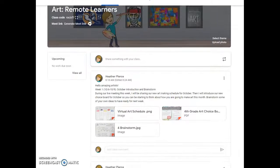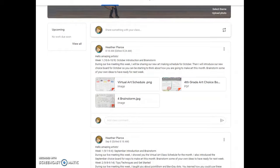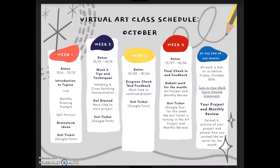Now if we look at the top of our stream, you are going to see new information for October. Looking at our schedule, remember we do this step-by-step, and this is the whole month. Week 1 is our first step here today. I am going to be introducing your new choices for the month, and then you will be brainstorming ideas. Do not forget to fill out your weekly exit ticket so that you are counted for attendance.